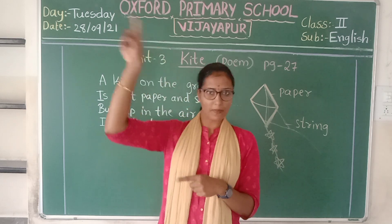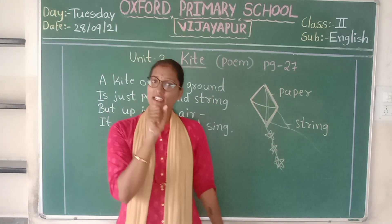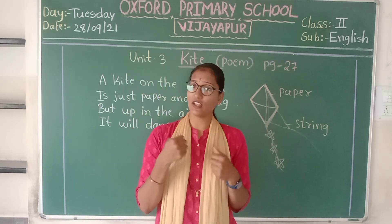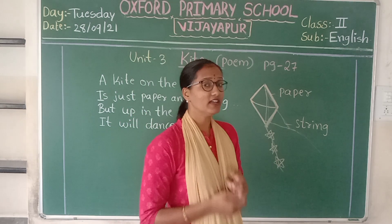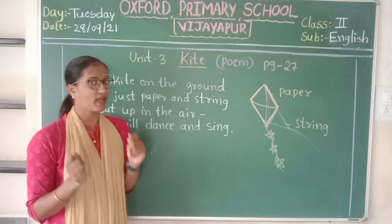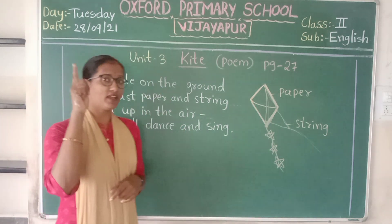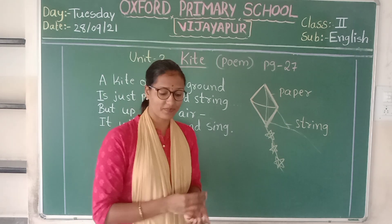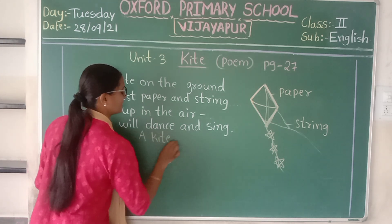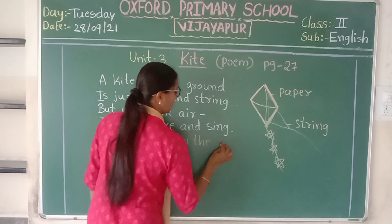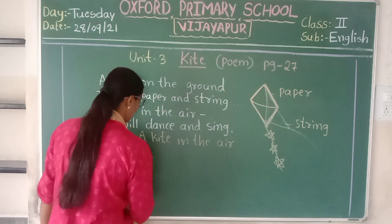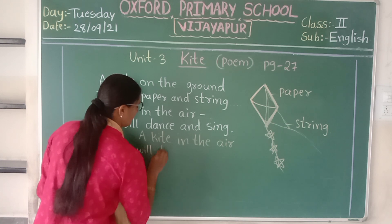See — when the kite is in the air, it means the kite will be very happy. We will also be happy. So they are saying: a kite on the ground is just paper and string, but up in the air it will dance and sing. A kite in the air will dance.